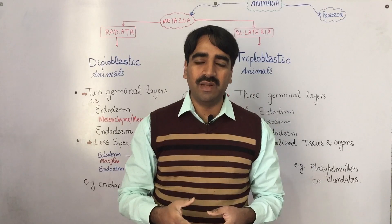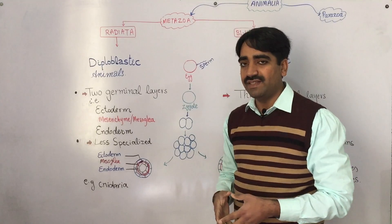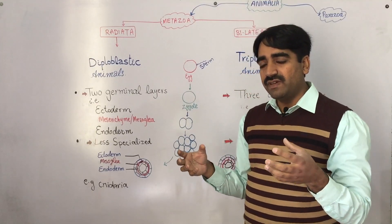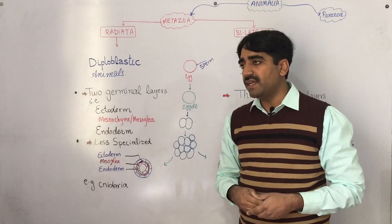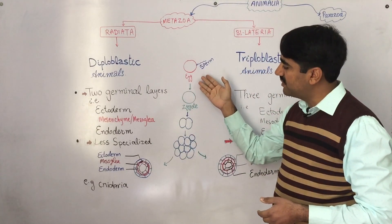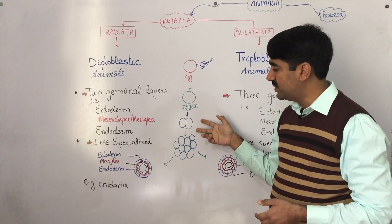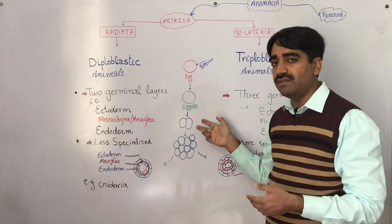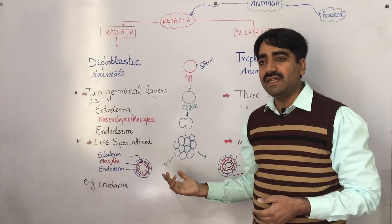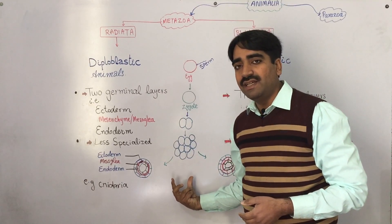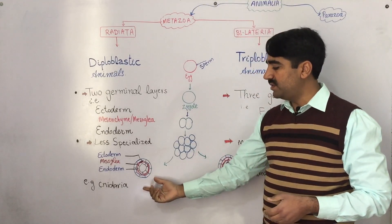This germinal layer is formed during embryo development, or embryogenesis. After fertilization — the fusion of egg and sperm — a single diploid cell called a zygote is formed. The zygote divides into two identical cells in the first cleavage, and further cleavage results in a group of identical cells called the morula.